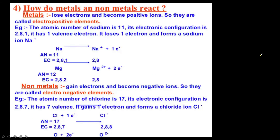How metals and non-metals react is the main thing. Metals lose electrons and become positive ions — they are called electropositive elements. Sodium has atomic number 11 with electronic configuration 2, 8, 1. The valence electron in the outermost shell is 1. Sodium loses 1 electron and forms a sodium ion Na⁺. Non-metals gain electrons and become negative ions — they are called electronegative elements. Chlorine has atomic number 17 with electronic configuration 2, 8, 7. It has 7 valence electrons and gains 1 electron to form a chloride ion Cl⁻.